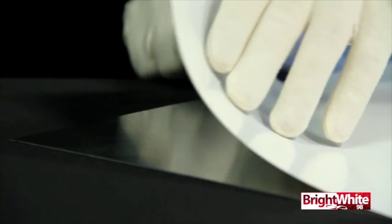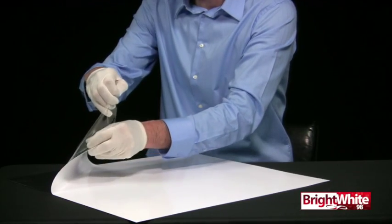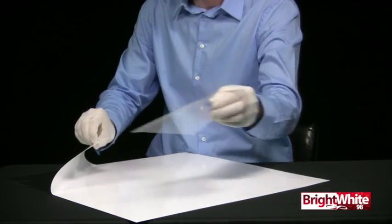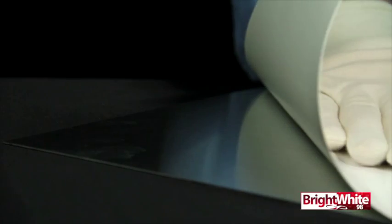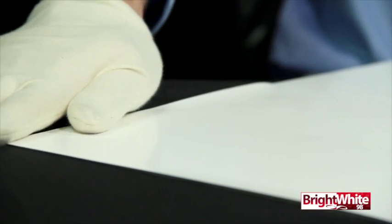First install the BrightWhite 98 reflector. The reflector features an adhesive backing. To install it simply peel the release sheet from the back of the reflector and stick it firmly into place making sure to cover all surfaces within the light cavity.